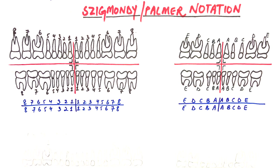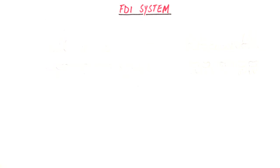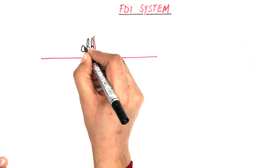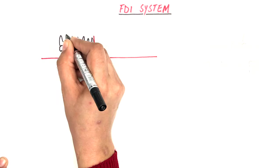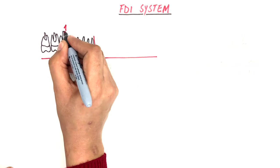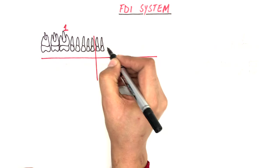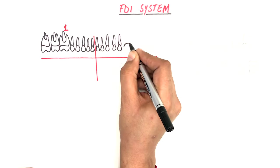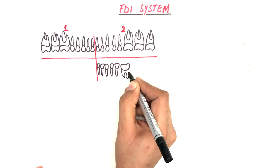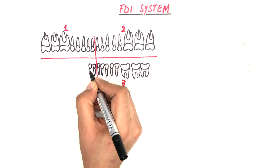The last system is the FDI, or World Dental Federation, system. The FDI system is a two-digit tooth numbering system that has been accepted by the WHO and other well-known organizations. In this system, the first digit indicates the quadrant number. For permanent teeth, number one represents the first quadrant — the maxillary right quadrant; number two represents the maxillary left quadrant; number three the mandibular left quadrant; and number four the mandibular right quadrant.